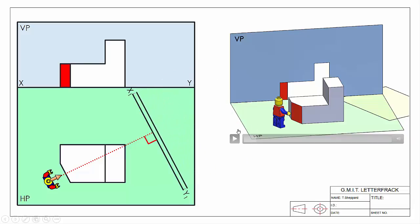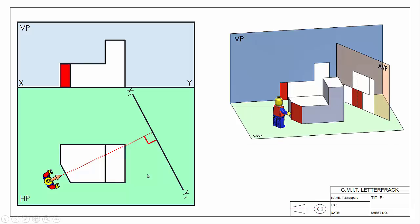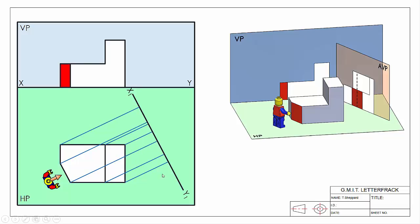This is where our auxiliary elevation is going to appear. In our 3D view we're going to cast what our spectator sees like a shadow onto our auxiliary vertical plane. We do the same in our plan view by drawing in our projection lines parallel to our viewing direction — casting them like a shadow onto our screen.